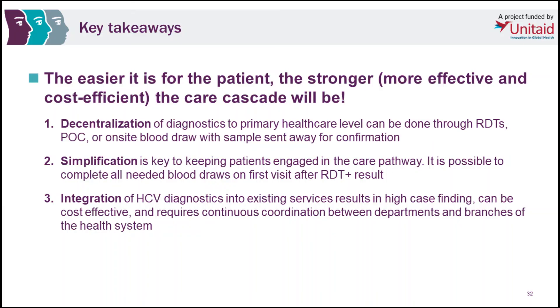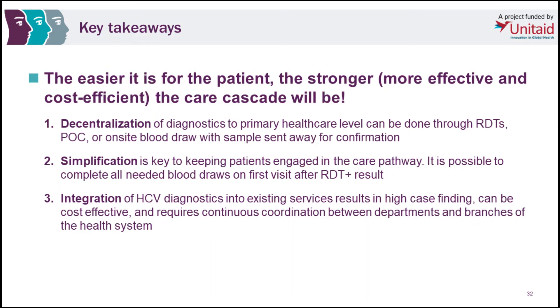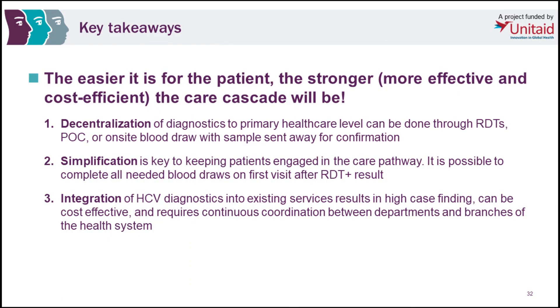The easier it is for a patient, the stronger, more effective, and cost-efficient the care cascade will be. That's the real bottom line emerging from our work and the work of others in this area. In summary: decentralization of diagnostics to primary healthcare level can be done through introducing rapid diagnostic tests, point-of-care testing, or on-site blood draw with samples sent for confirmation. Simplification is key to keeping patients engaged in the care pathway — it is possible to complete all needed blood draws in the first visit after an RDT positive result. Integration of hepatitis C diagnostics into existing services results in high case finding, can be cost effective, and requires continuous coordination between departments and branches of the health system.